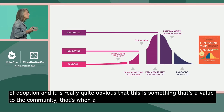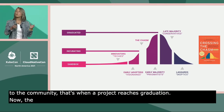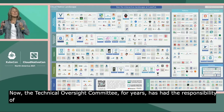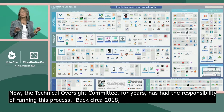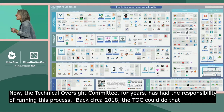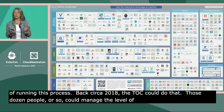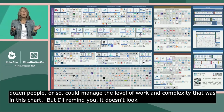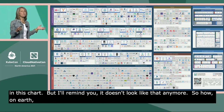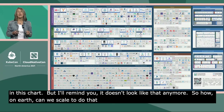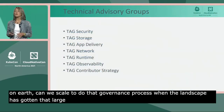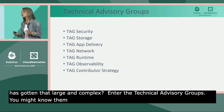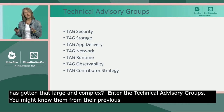When a project is starting to prove itself out — still not in the majority but showing great promise — that's when projects can apply for incubation. Then eventually, once they've crossed the chasm and achieved a great deal of adoption where it's really quite obvious this is something of value to the entire community, that's when a project reaches graduation. The Technical Oversight Committee for years has had the responsibility of running this process, and back around 2018 when the landscape looked much simpler, the dozen or so TOC members could manage that level of work.